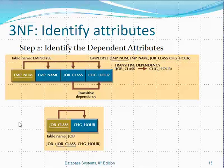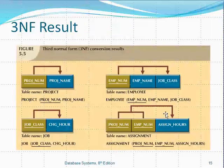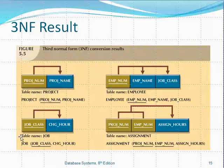Once we have this new table, the next step is to remove the attributes that were assigned to the new table from the initial table. Doing this, we obtain two tables: the original employee table keeping just a foreign key referencing the new table's primary key, job class; and the new Job table with job class as the primary key and charge per hour as the dependent attribute. All these tables are now in the third normal form because we have neither partial dependencies nor transitive dependencies.